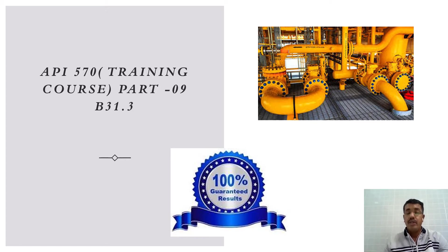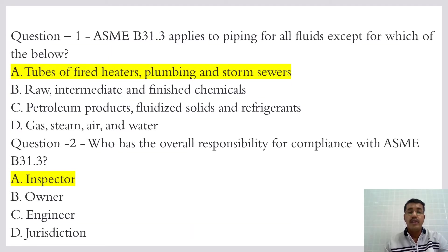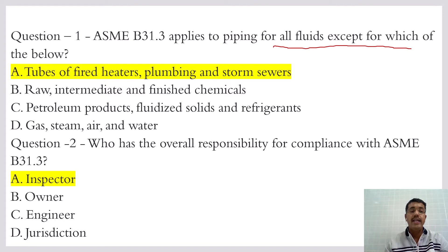Today we will discuss some questions about B31.3. B31.3 applies to piping for all fluids — we have learned about inclusion and exclusion. B31.3 covers all fluids except pipes, fire heaters, plumbing, and storm sewers, which are not included. All others are included.